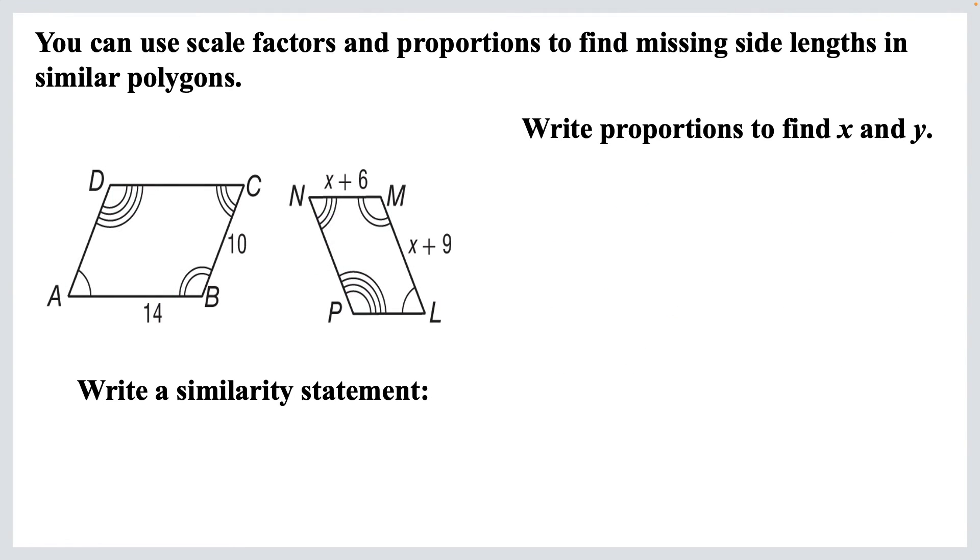Let's try another one. Let's try a quadrilateral. So first write a similarity statement. So we'll say that ABCD is similar to LMNP. And again, remember, the order of those letters really matters. So AB, those are the letters that come first. That corresponds to LM. Those are the letters that come first in the other one. So 14 partners with X plus 9. And just to double check, those are between the one arc and the two arcs. See that? One arc and two arc.